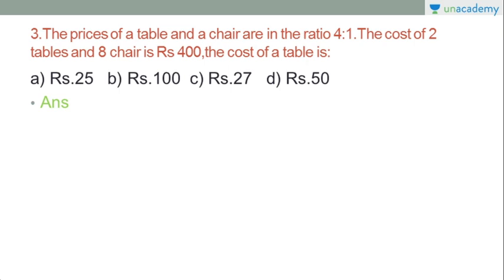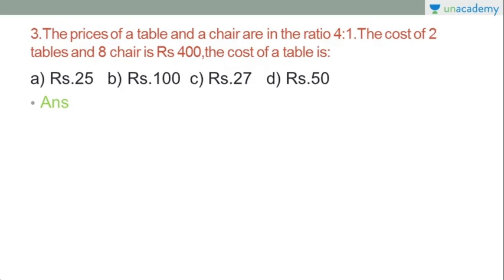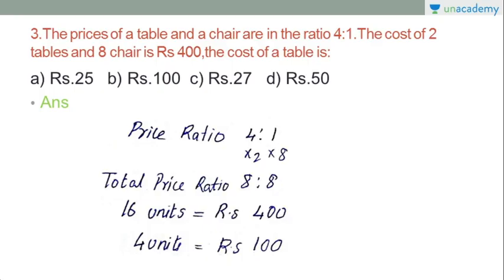The cost of 2 tables at ratio 4 is to 1 means 8 units for tables. Adding 8 chairs gives 8 units for chairs. So total price ratio: the chair units are 8, and there are 16 units total, which equals Rs. 400.